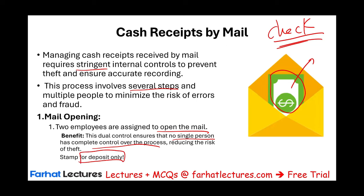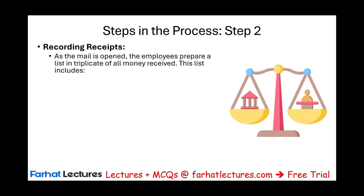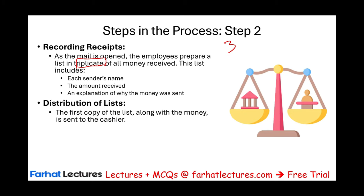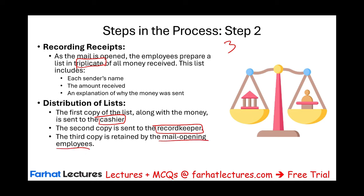This dual control ensures that no single person has complete control over the process, reducing the risk of theft. Next, the employees prepare a list — in triplicate — of all money received. This list includes each sender's name, the amount received, and an explanation such as their account number. The first copy goes to the cashier who will deposit the money, the second copy goes to the record keeper or accountant, and the third copy is retained by the people who opened the mail.